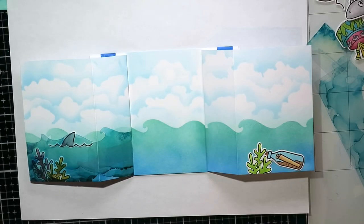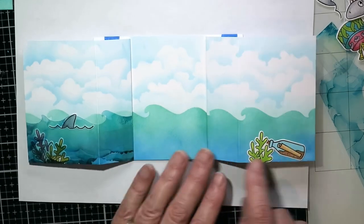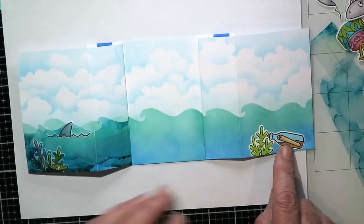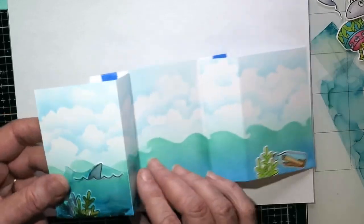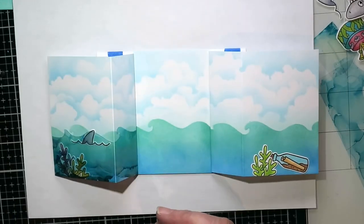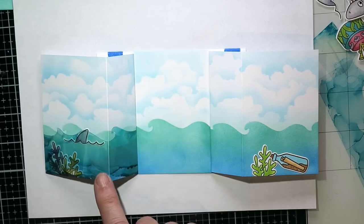So now I've actually glued some of my images down. I've got the shark fin and the coral from Gerda Steiner Designs stamp set, and a little message in a bottle. And I've actually started attaching that laminate.